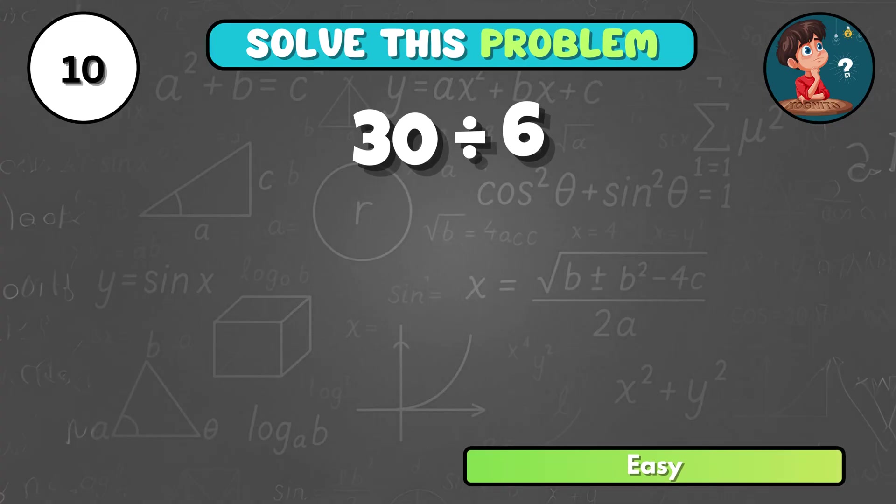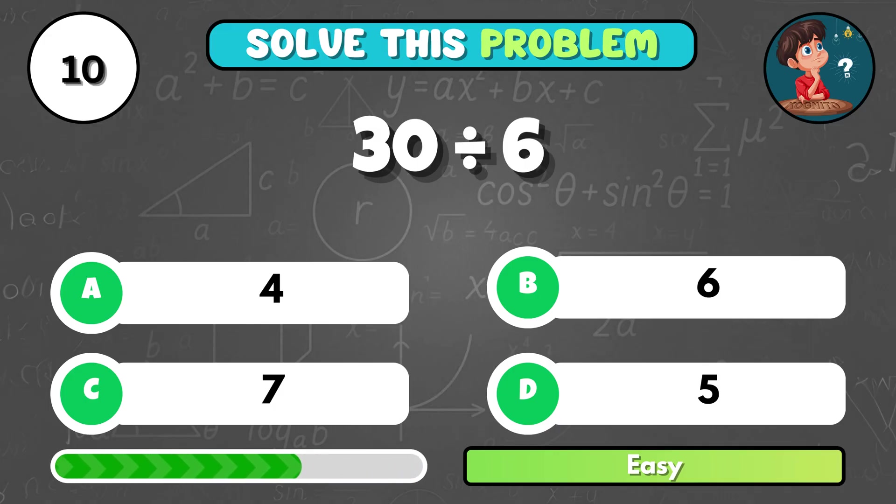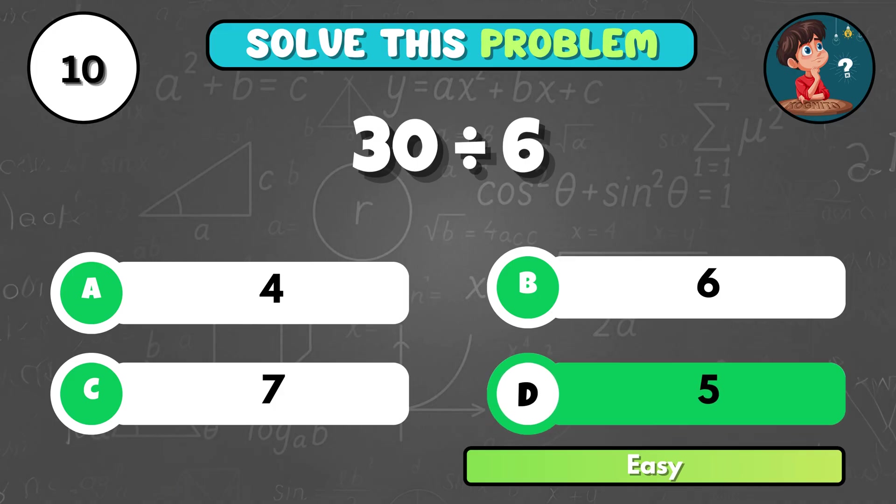If you split 30 into 6 equal groups, how many are in each? That's D, 5.